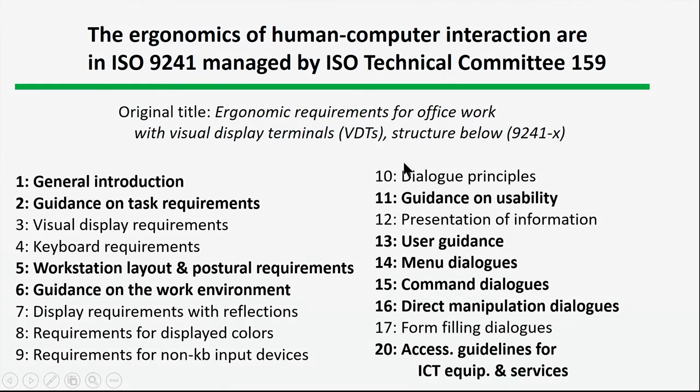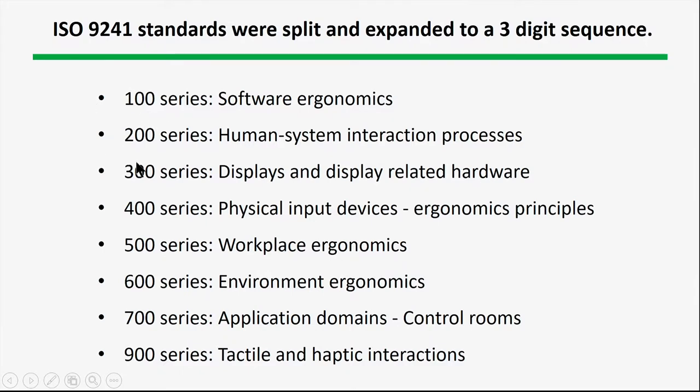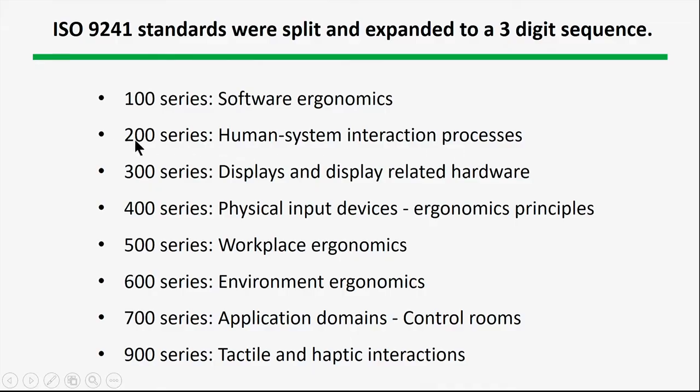Here are some other sections of that document: guidance on usability, menus, command dialogues, direct manipulation dialogues, form filling, and so forth. These are the initial main parts when this was originally designed for office work only and for visual display terminals only. The scope has expanded considerably, which is why they've had to basically renumber the document — now divided into 100-series level documents.